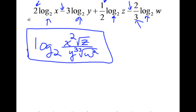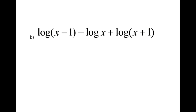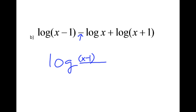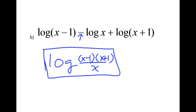Let's do it one more time. I've got the common log of x minus 1, minus the common log of x, plus the common log of x plus 1. I have a negative log, so I know I'm going to have a fraction. The first log, x minus 1, is positive so it goes on top. The x plus 1 is also positive so it goes on top. The only negative log is x, so x becomes the denominator of this new argument, and I've condensed this into a single log. Hopefully this isn't too bad — we'll see you later.